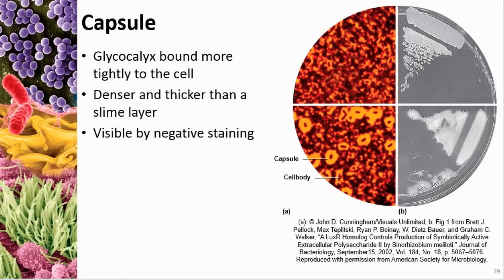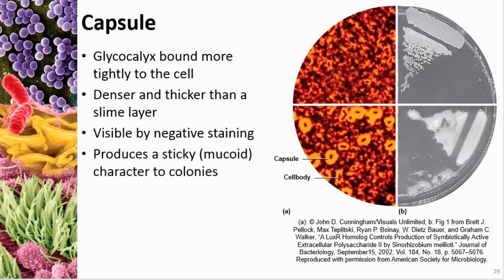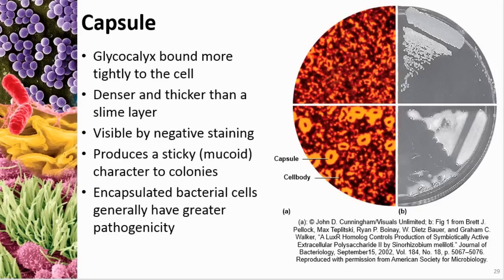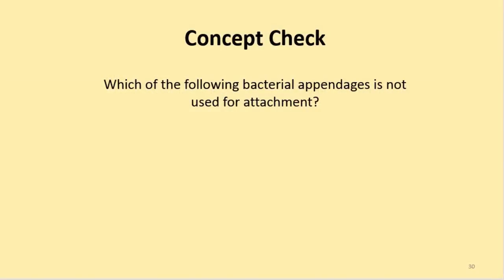They negative-stain the glycocalyx in order to see it under a microscope, as it produces a sticky mucoid — meaning mucus-like — layer. Cells that can produce a capsule have greater pathogenicity, meaning they're more able to cause disease — not necessarily because they perform better, but because our immune system has a harder time fighting them off due to the extra armor. The flagellum is not used for attachment; it is used for motility.